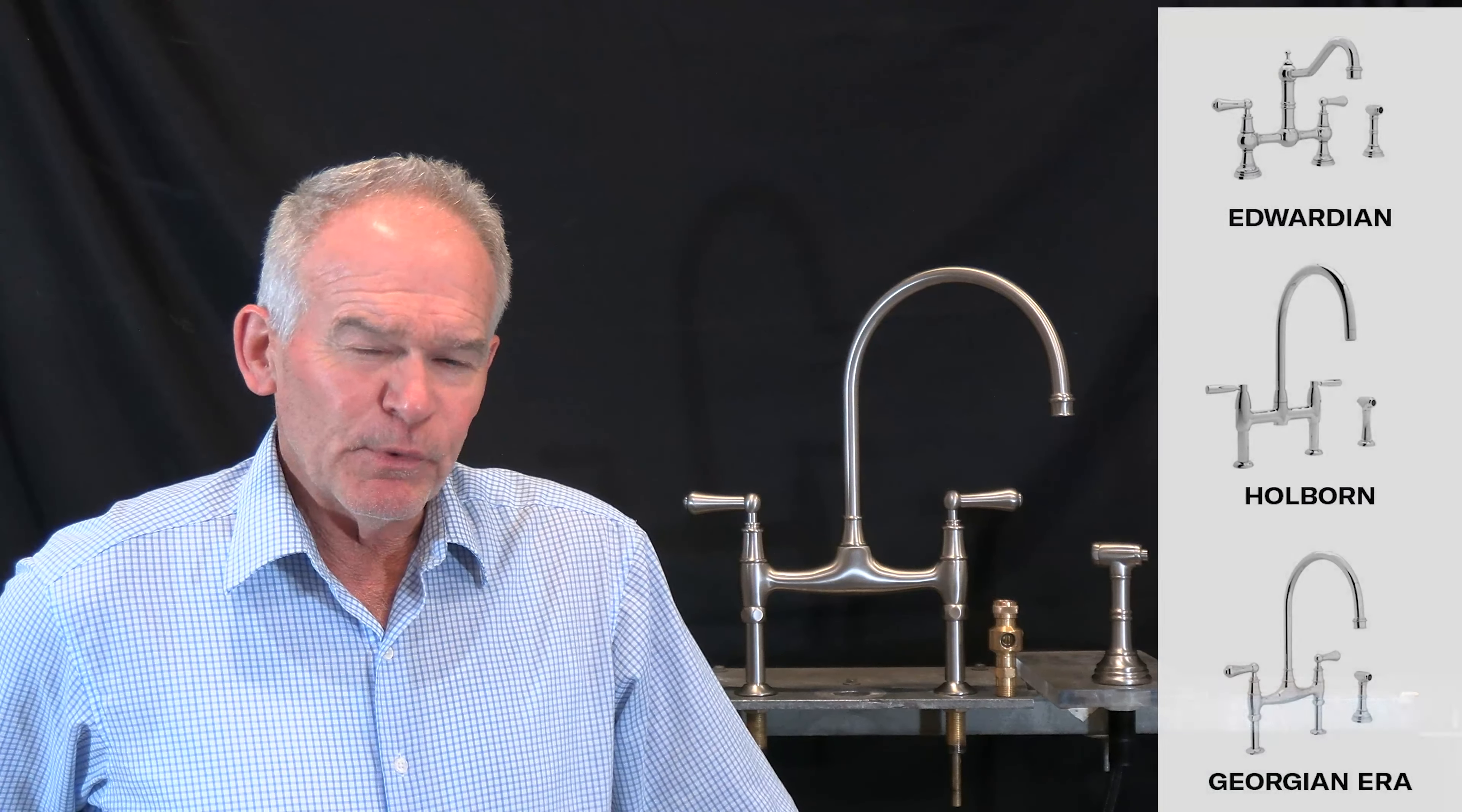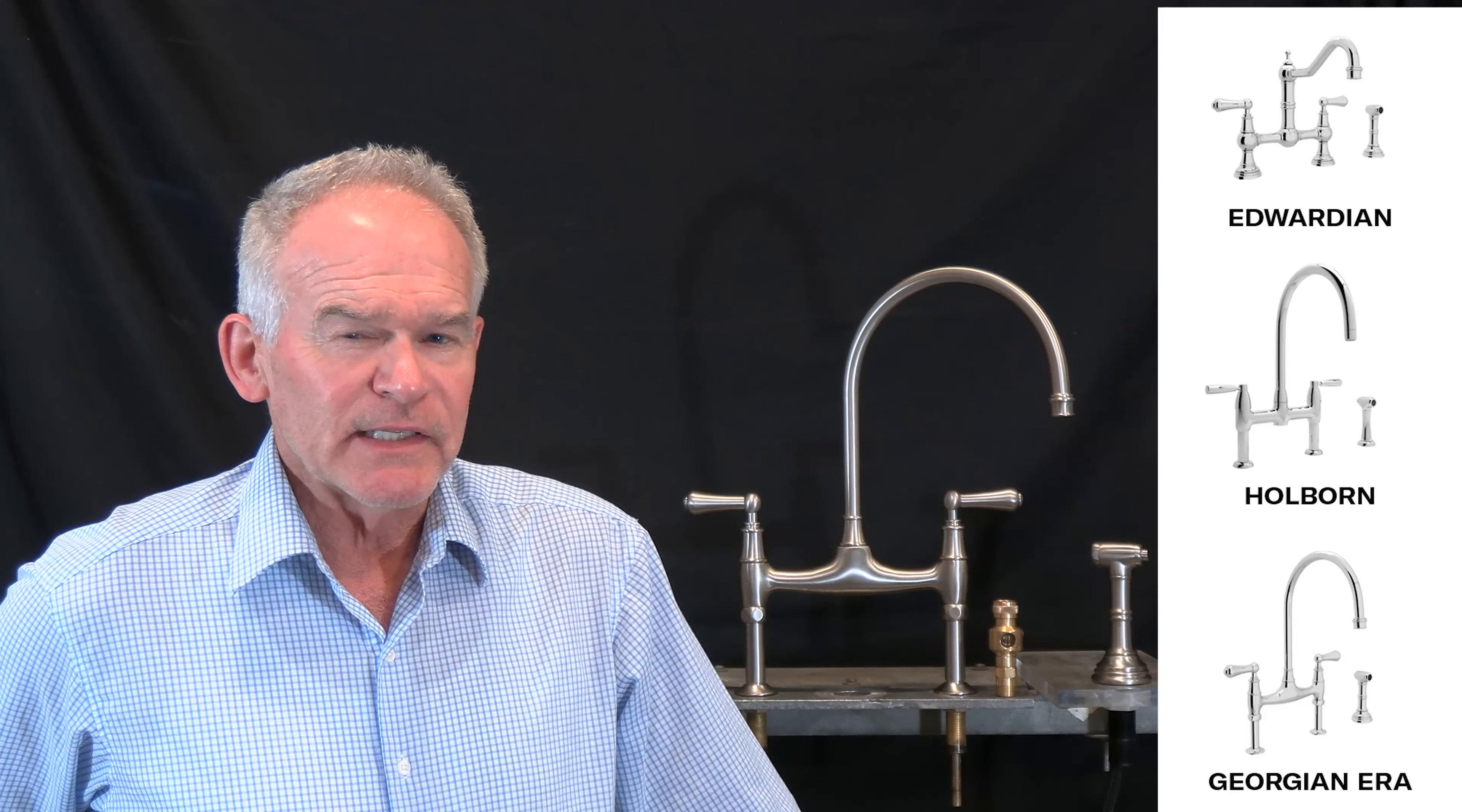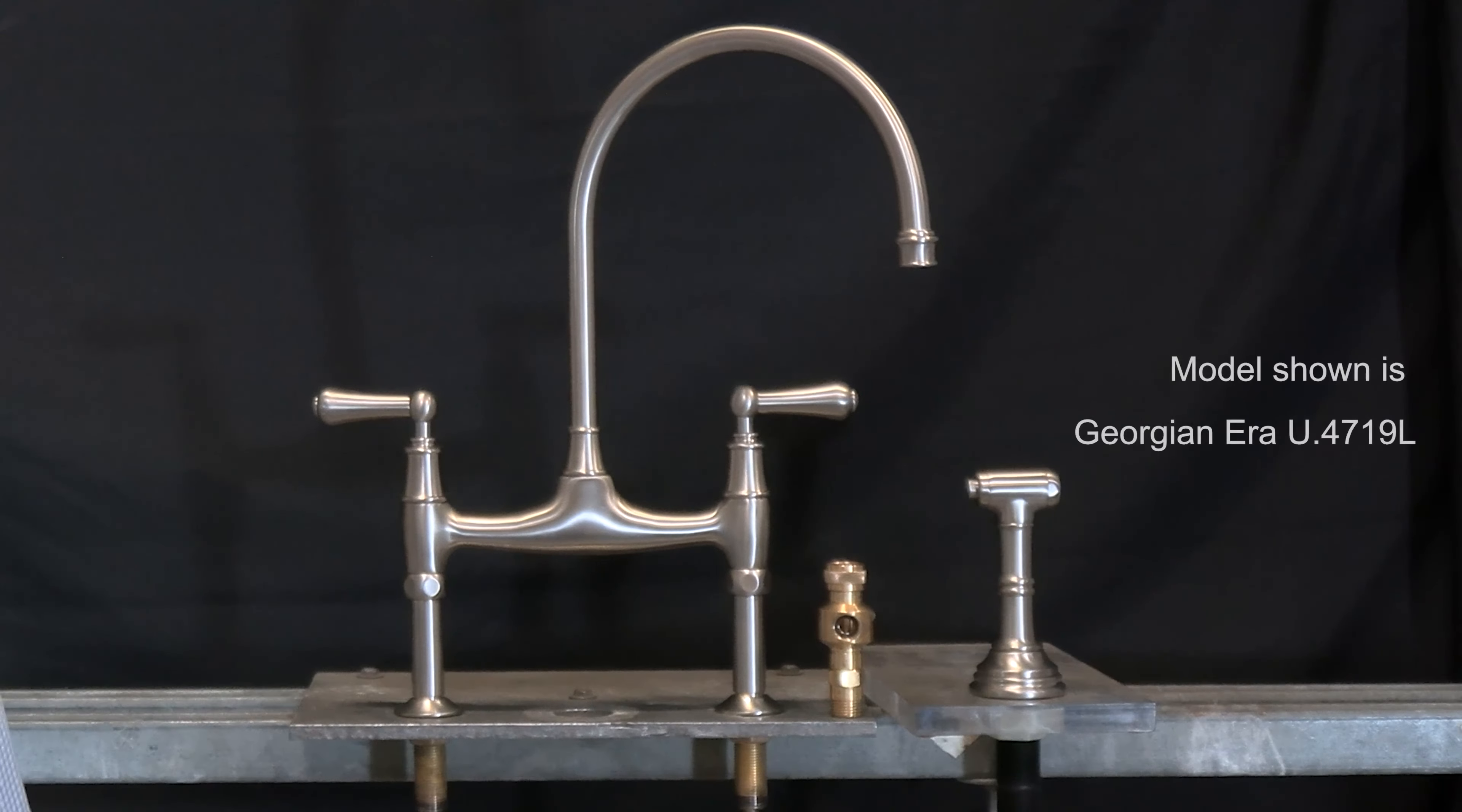In this video we will discuss the correct installation techniques for putting in the Edwardian Holborn and Georgian kitchen faucet with side spray. Today we're working with the 4719 two-hole kitchen faucet from Perrin and Rowe.